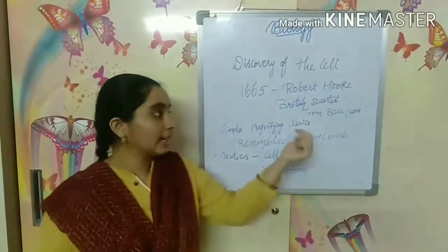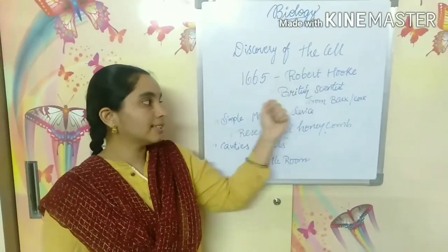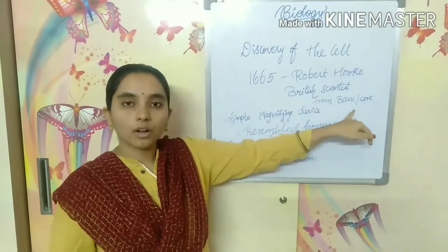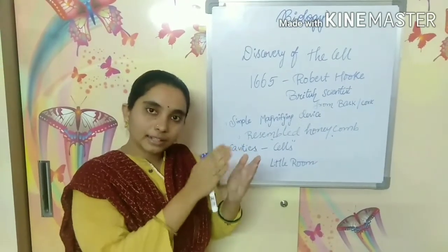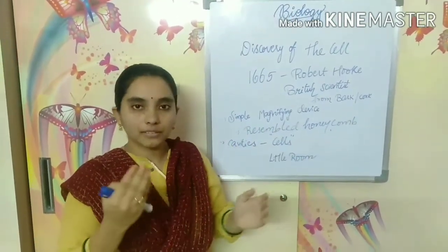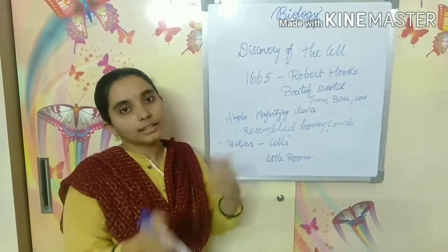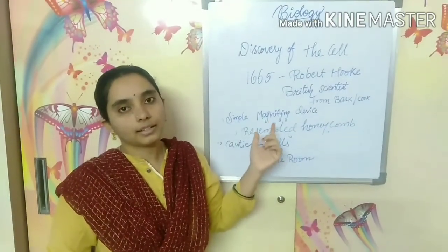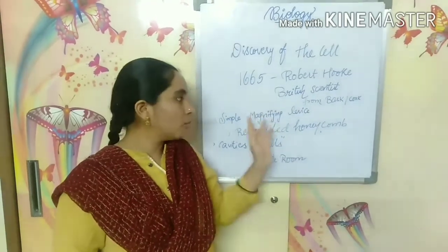There was one scientist named Robert Hooke — in 1665 he discovered the cell. Robert Hooke was a British scientist who observed the cell from the bark or cork of the oak tree. The stem of a plant has bark on it, a brown-colored structure. If you take the inner layer of the stem, that is called the cork, which is very soft. If you take a thin slice of the cork and observe it, you will visualize the cells. Robert Hooke first discovered the cell using a simple magnifying device that he prepared himself.